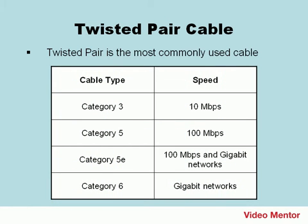Here are some cable types and the maximum speeds they can achieve. With each of these cable types, there are eight wires, or pins, which are grouped into pairs. So, eight wires, four pairs, and the pairs are twisted along the entire length of the cable.